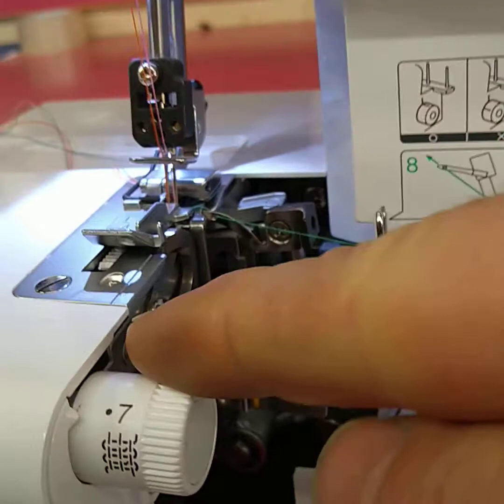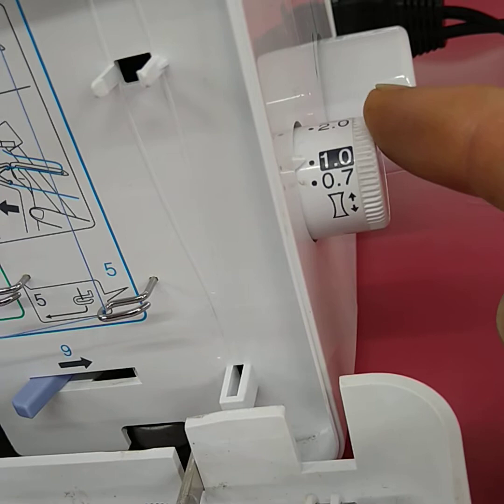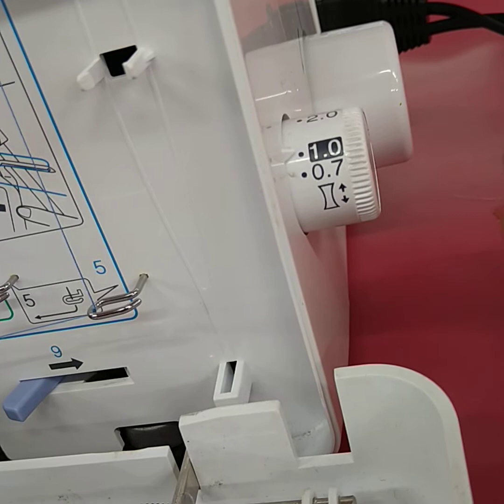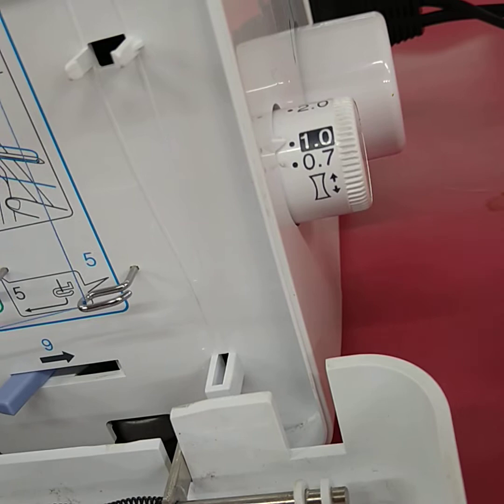In addition to that we've got the differential feed, which is an adjustment that you can use to help control the fabric when you're doing difficult fabrics or stretchy fabrics. Generally leave it on one and the machine will perform for you, at least initially while you get used to it.